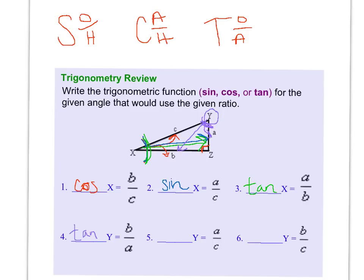The next one is A over C. So again, looking at angle Y, A is adjacent and C is the hypotenuse. So adjacent over hypotenuse is cosine.